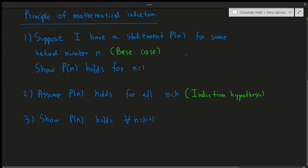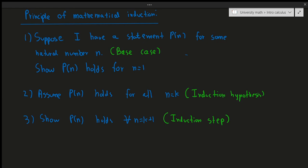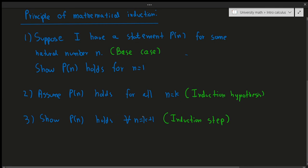Step 3 is called the induction step. Step 2 is never actually directly proven. A lot of people assume that the induction step proves the induction hypothesis — that's not true. The induction step, along with the base case, is what proves this statement for all n. The induction hypothesis is only used as a stepping stone or as a conditional statement to facilitate the use of the induction step. It is never actually directly proven in mathematical induction.